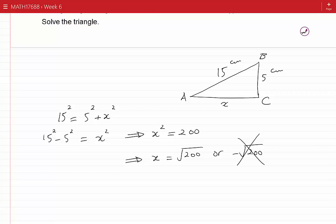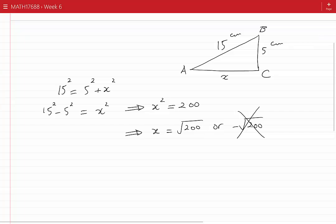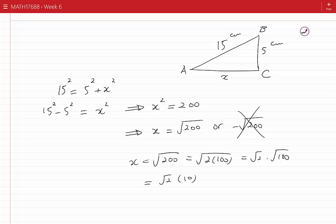Therefore, X is root 200, which I can write as root of 2 times 100, which is root 2 times root 100. This is root 2 times 10, because root of 100 is 10, and that is 10 root 2.